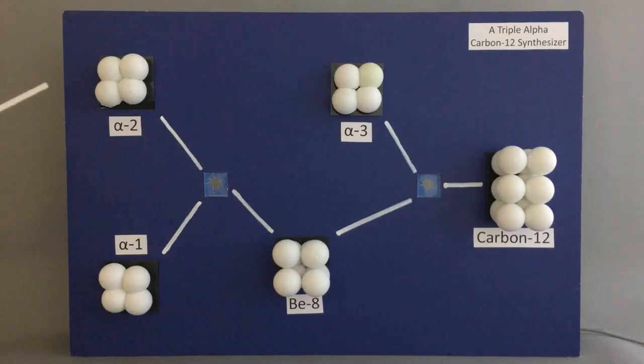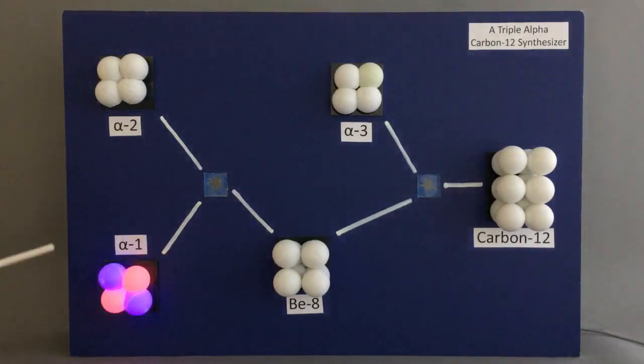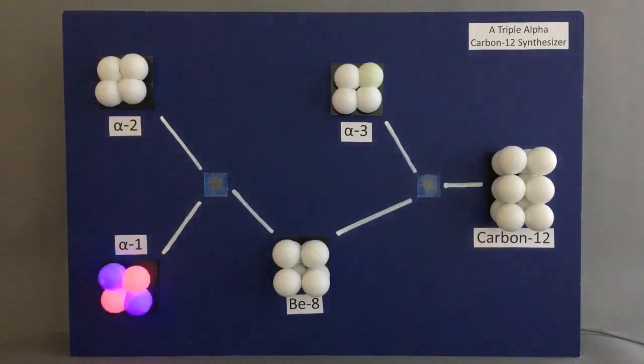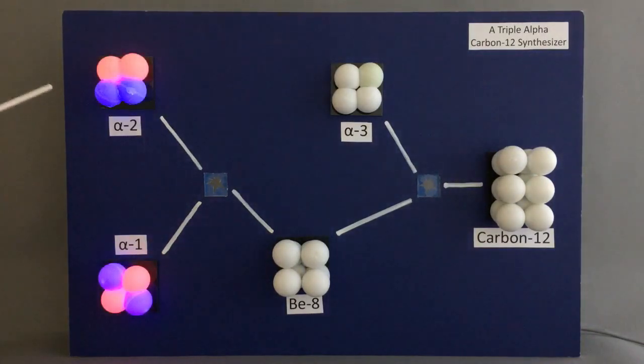First, there are the two alpha particles. Each is the nucleus of a helium atom, or said another way, a helium atom without its two electrons. Alpha particle one: two flashing protons, two flashing neutrons. Here's alpha particle two.